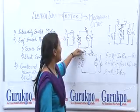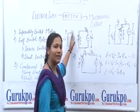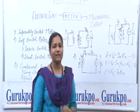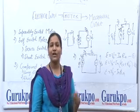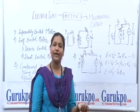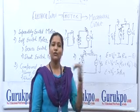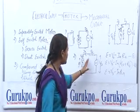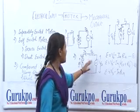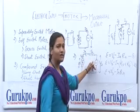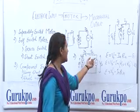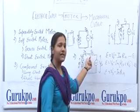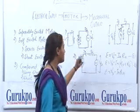But in the separately excited motor, we have the field winding as separately excited. The second type is the self-excited motor. In the self-excited motor, the excitation is provided through the winding itself. This will be explained through the diagram — the field windings are connected in series with the motor windings.